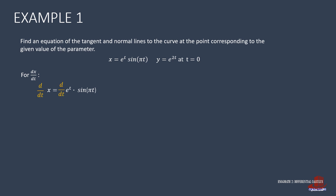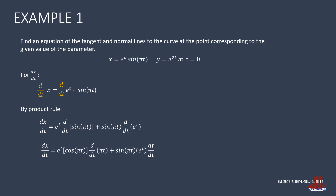The slope dy/dx can be solved by breaking down the derivatives with respect to t. Starting with the x equation, dx/dt is the derivative of e^t · sin(πt). By using the product rule, we have dx/dt = e^t · (derivative of sin(πt)) + sin(πt) · (derivative of e^t). Differentiating further gives e^t · cos(πt) · π + sin(πt) · e^t, where the derivative of πt is π and the derivative of t with respect to t is 1. Simplified: dx/dt = e^t · [π·cos(πt) + sin(πt)].